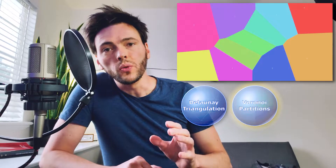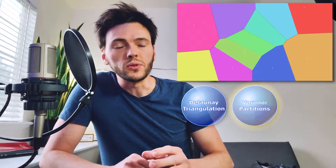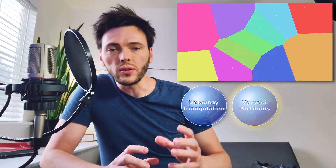We're going to look at Delaunay Triangulation, which is a way to connect points on a plane without any overlapping lines. We'll look at Voronoi Partitioning, which is a way to split a plane into the regions that are closest to a given set of points, and Natural Neighbor Interpolation, which is a way to use Voronoi Partitioning to smooth between randomly sampled data points. Alright, let's have some fun!